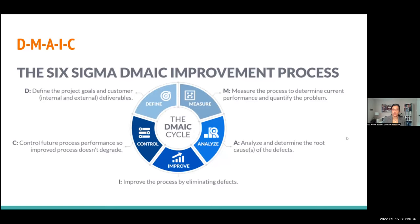Another framework is the Six Sigma DMAIC improvement process, adapted from other industries. First, Define the project goal and deliverables — what are you trying to achieve? Then Measure current processes to quantify the problem. Analyze to determine root causes. Improve the process by eliminating those root causes. And Control — sustaining future process performance to ensure your improvement doesn't degrade over time and developing sustainability.